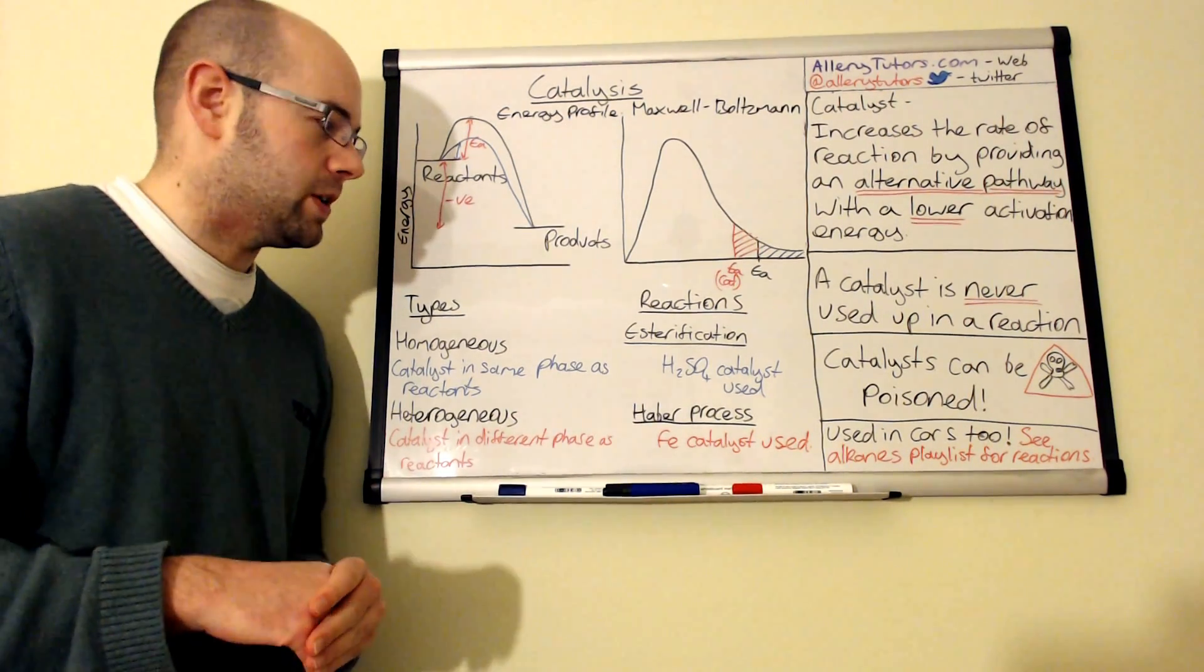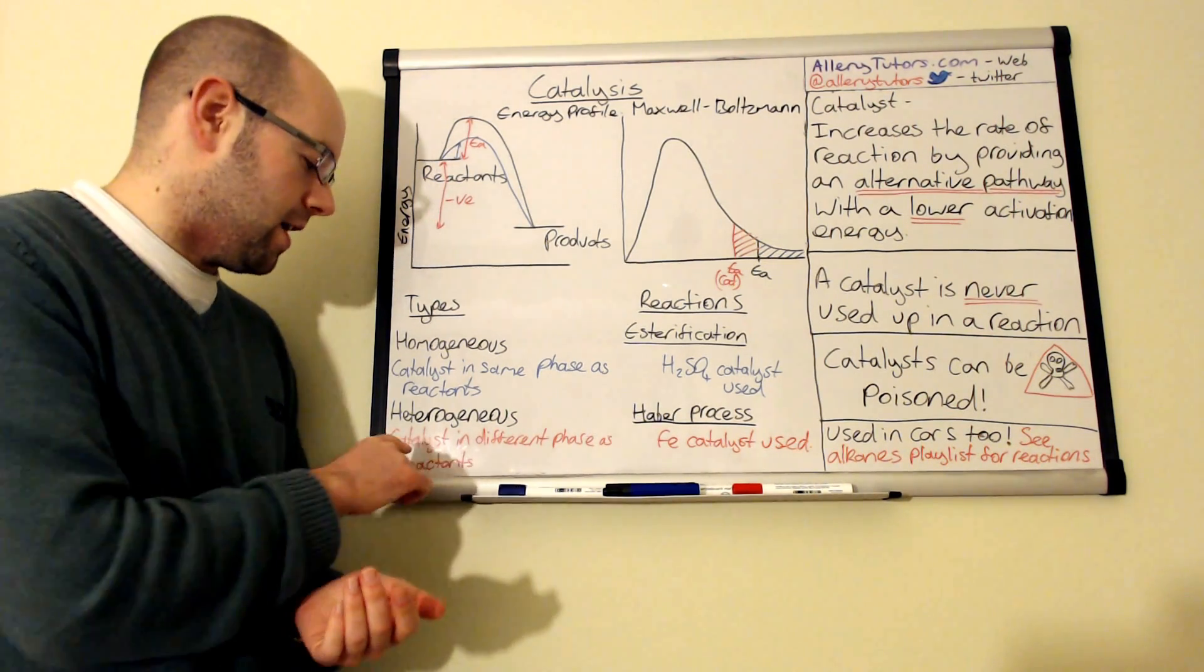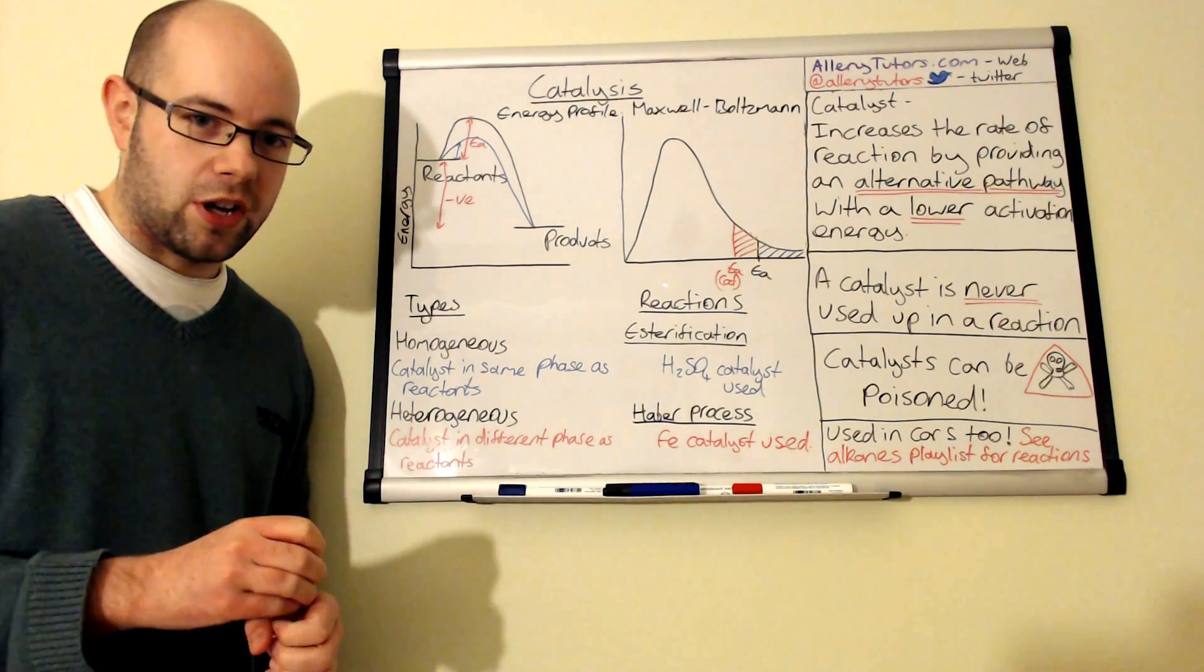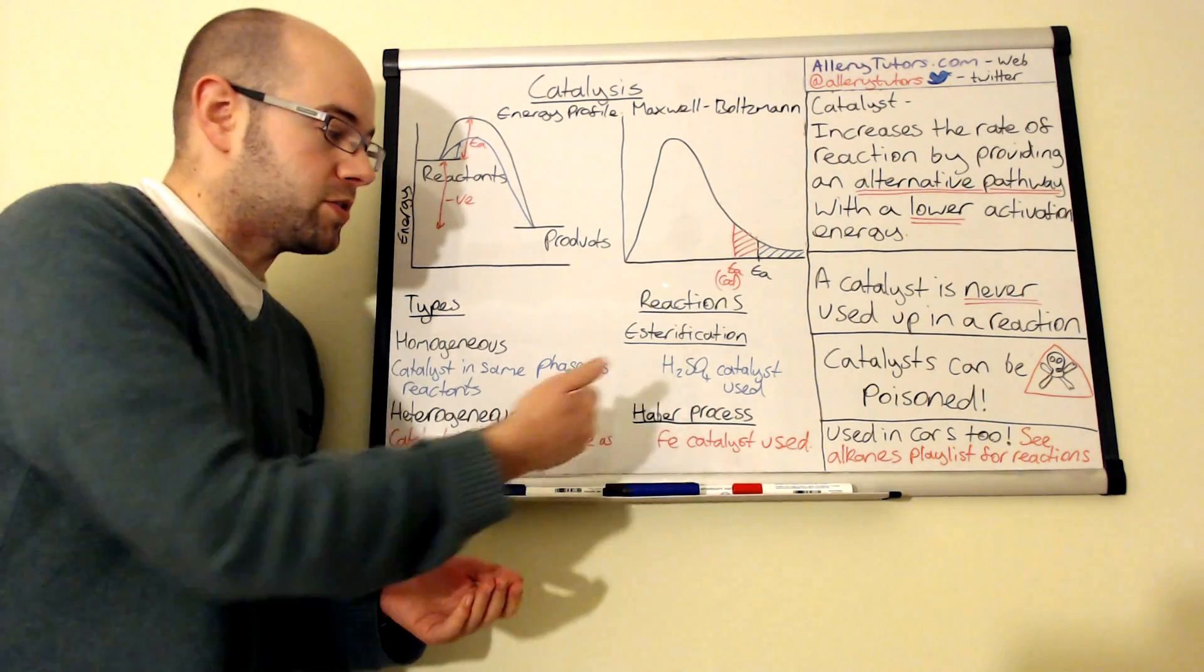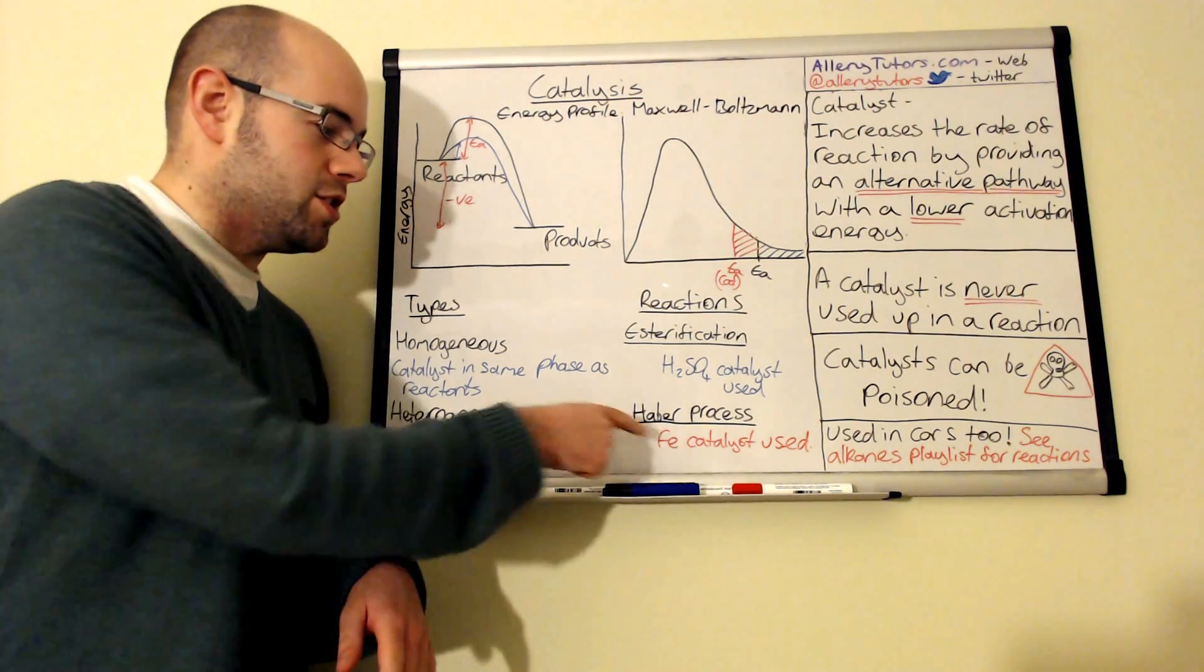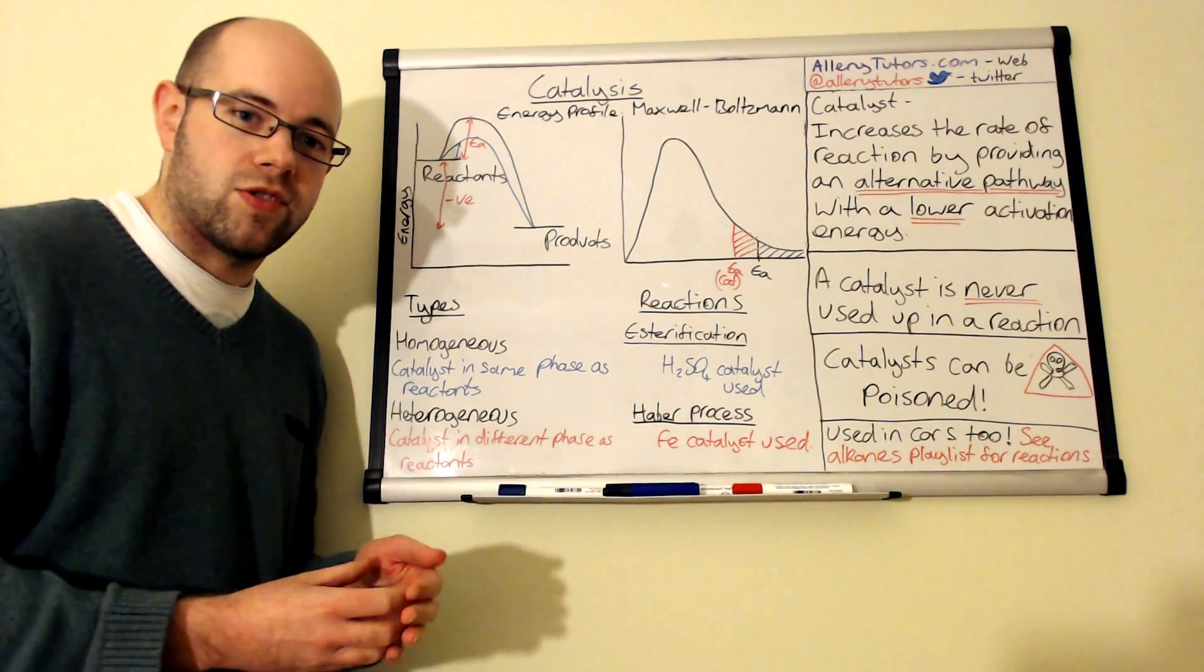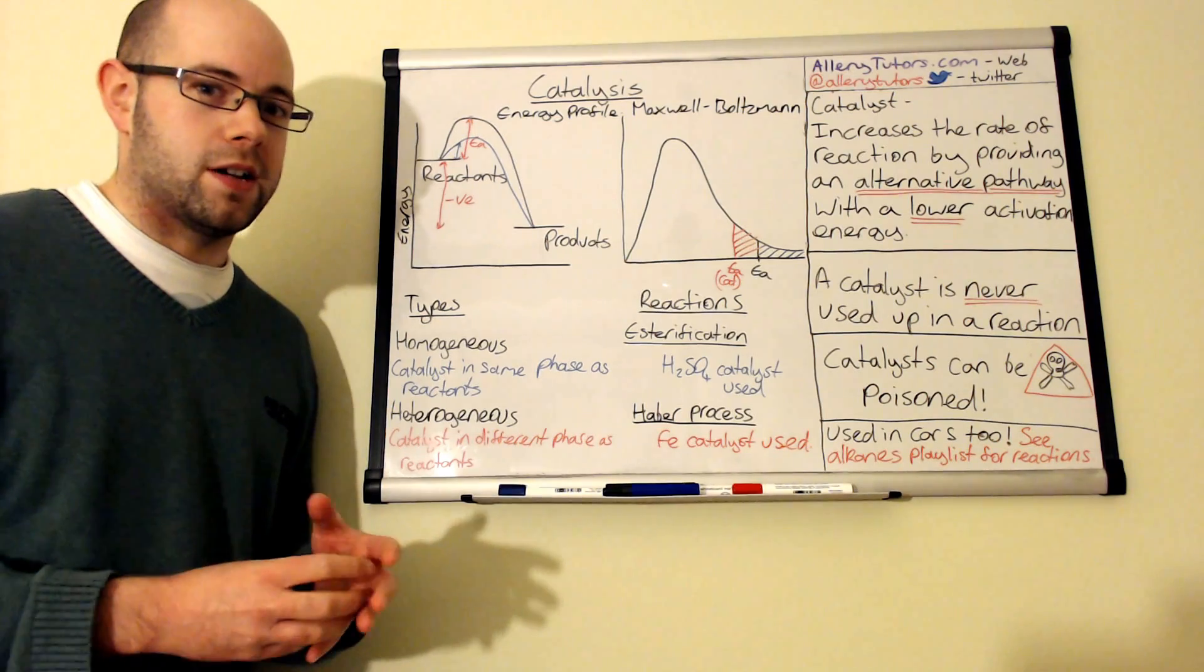The other type of catalyst is a heterogeneous catalyst. A heterogeneous catalyst is a catalyst that's in a different phase. For example, you might have a solution or two solutions that you mix together and you put a solid catalyst in there, or it could be a gas as well. For example, the Haber process is the manufacture of ammonia from nitrogen and hydrogen, and you'd use an iron catalyst. Because nitrogen and hydrogen are in the gas phase and iron is a solid, iron is classed as a heterogeneous catalyst. The advantage of this is that heterogeneous catalysts can easily be separated at the end of the reaction.